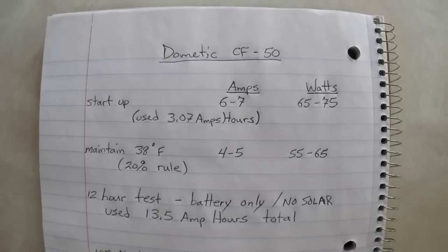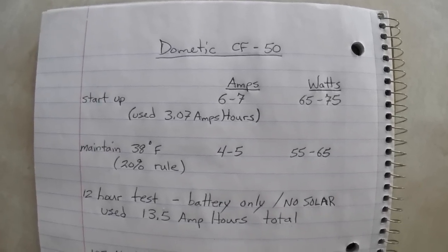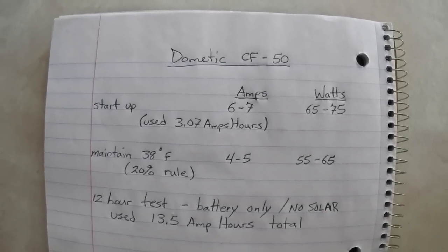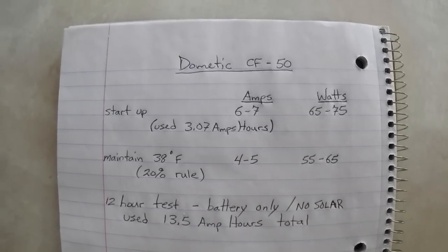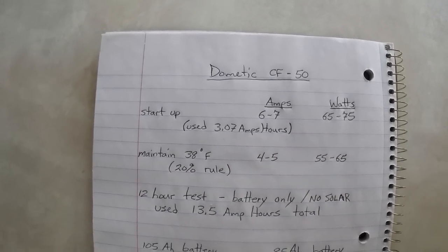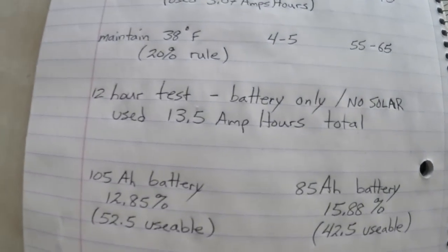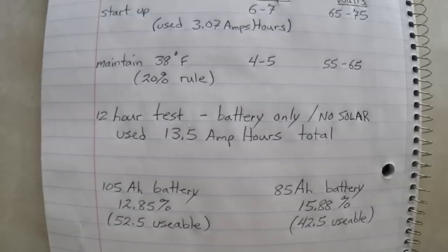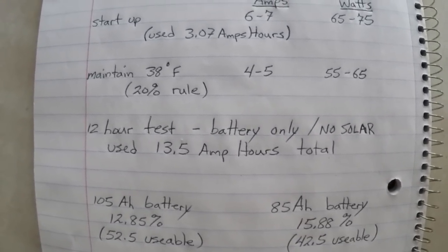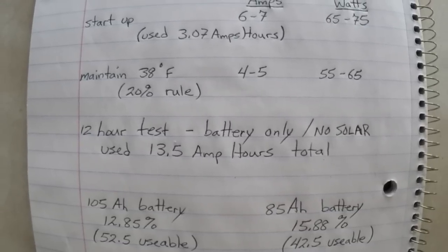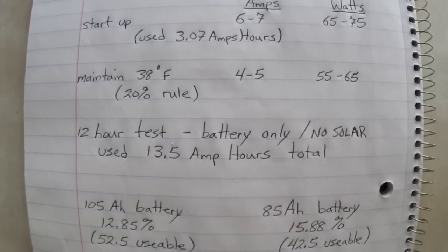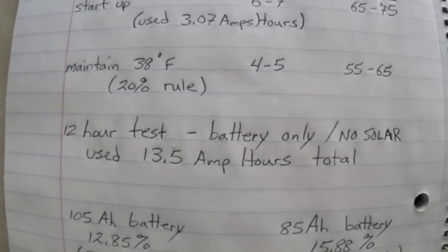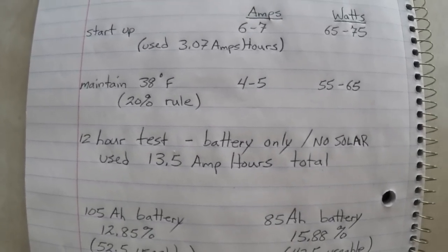And then I let it run for 12 hours with no solar power, just running strictly off the battery, telling me exactly how much power it consumed for a 12-hour period just maintaining that 38 degrees. I was kind of surprised and impressed. For my 12-hour test, battery only with no solar, it used 13.5 amp hours total for a 12-hour period. I started the test at 80 degrees where the refrigerator was in the camper. At the end of the test in the morning it was 60 degrees. The temperatures on the outside of the refrigerator are certainly going to vary your results with this, but just so you know where my temps were during the test.